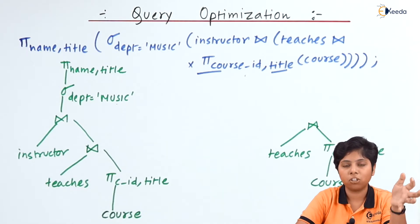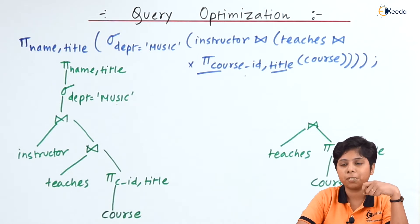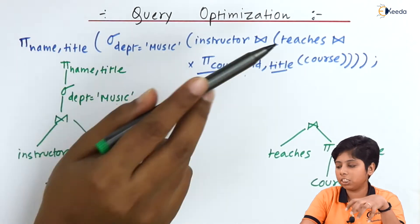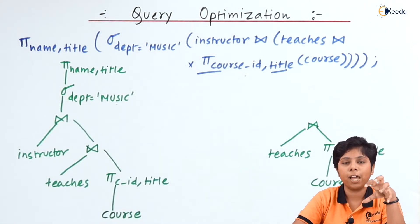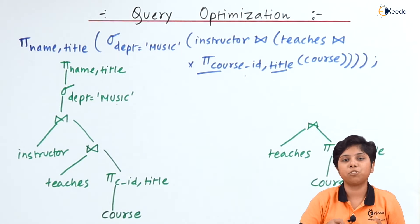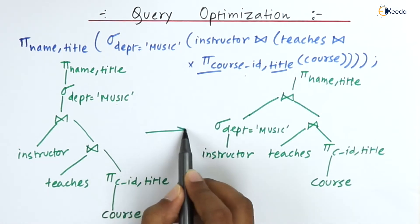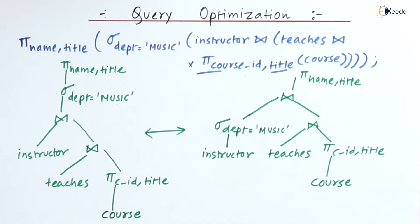If we first make the selection over the instructor, then join with teaches and course, it not only shortens the intermediate result but also helps us better project on name and title because there are fewer tuples. This equivalent expression tree is better optimized. We now generate evaluation plans to determine the cost of this version.